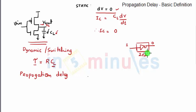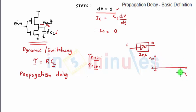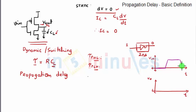Now there are two types of propagation delay: one is high-to-low propagation delay and the other is low-to-high propagation delay. High-to-low and low-to-high are terms given with respect to the output. So here, suppose I have drawn my input — this is my input and this is time t. Here I am drawing my output Vout and this is time t again. Let's presume that my input was initially zero but slowly it went high and then it came back to zero.